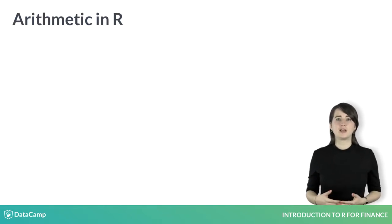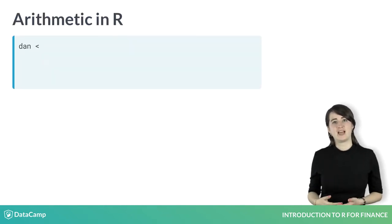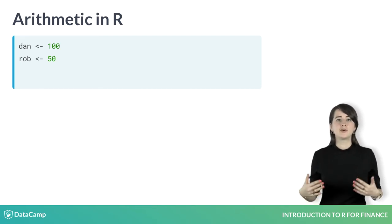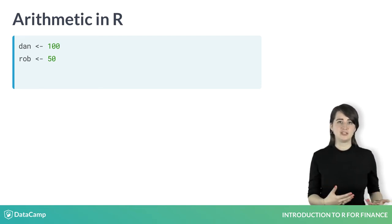As another example, assume your good friend Dan owes you $100. To keep track of this, you can create a variable named Dan and assign the value of 100 to it. If your other friend Rob owes you $50, you can repeat the process by creating a variable for Rob and assigning it 50.